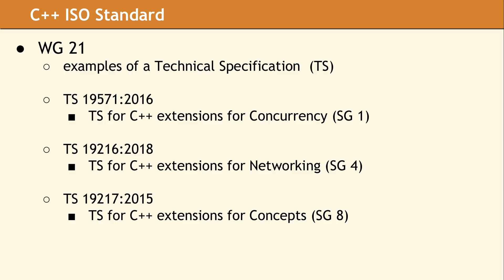It is important to remember that until a new IS has been approved by ISO, there is no definitive way to know exactly what will be in the new version of the C++ language. Nothing is guaranteed, and anything can change until the voting process for the updated international standard is complete.